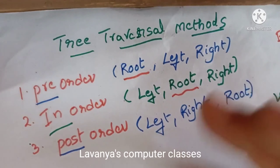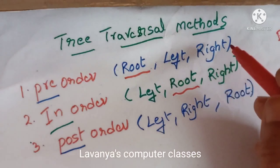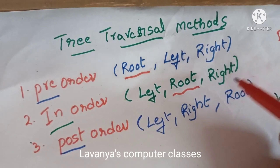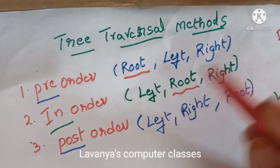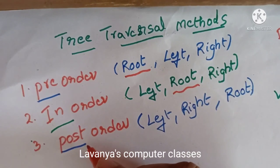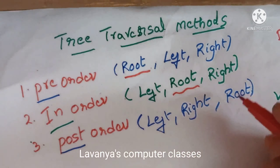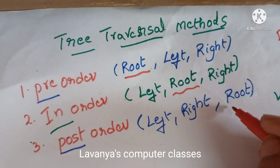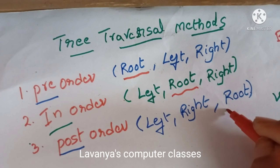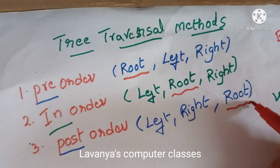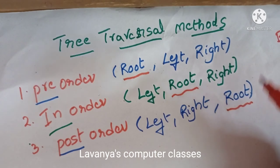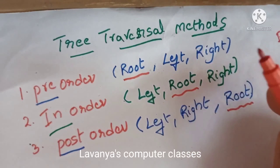This is a recursive procedure — the same rules are applied for sub-trees as well. So pre-order: root first; in-order: root is in the middle; post-order: root is last.